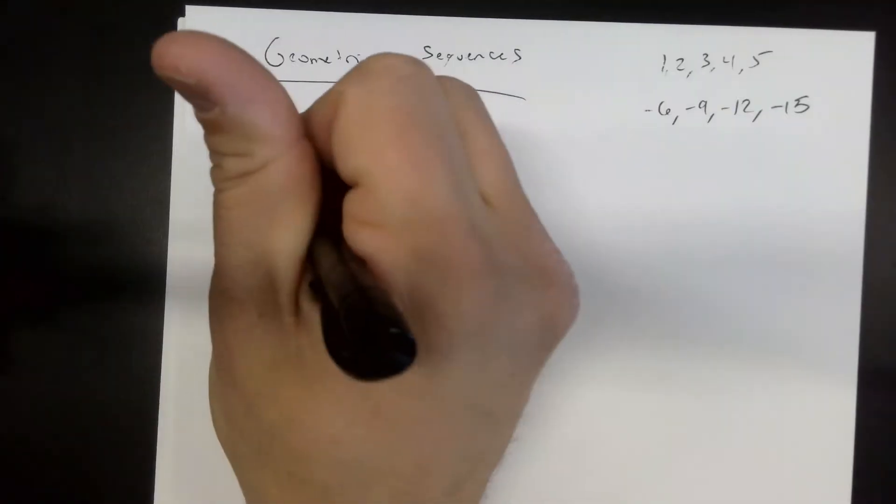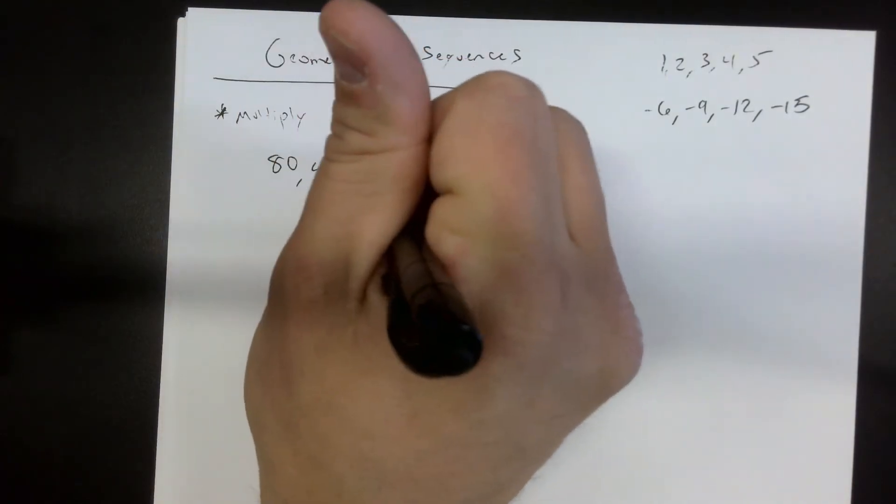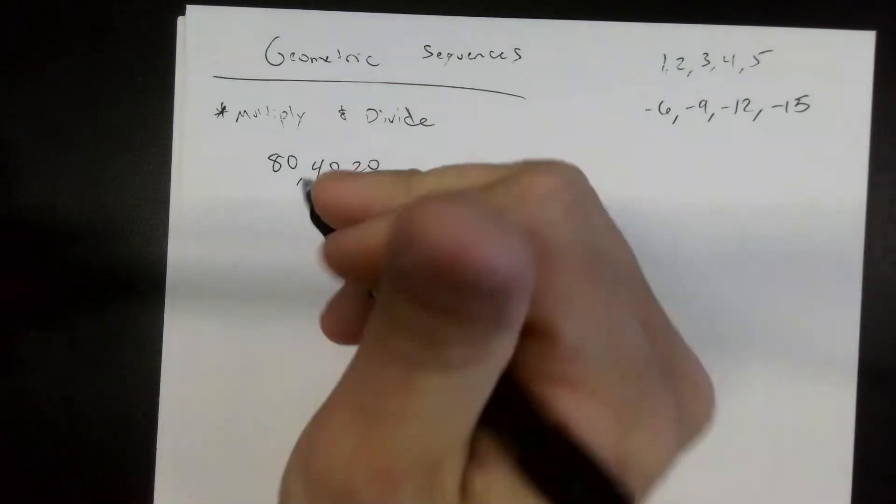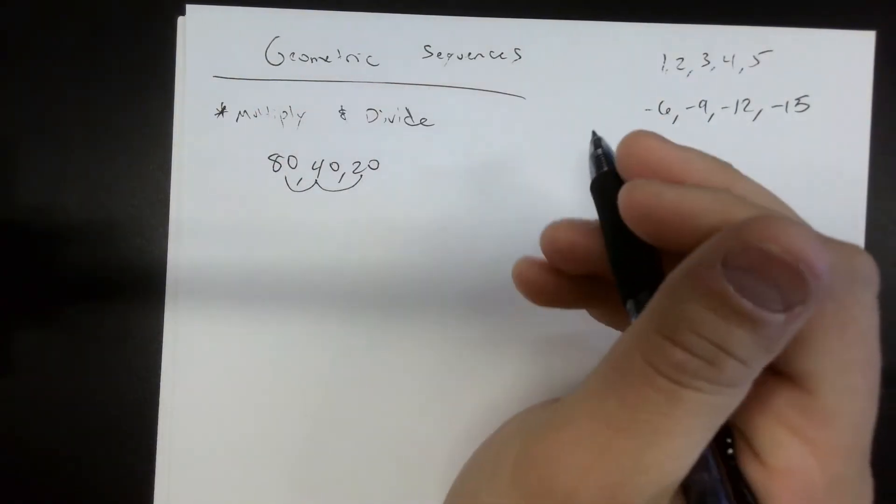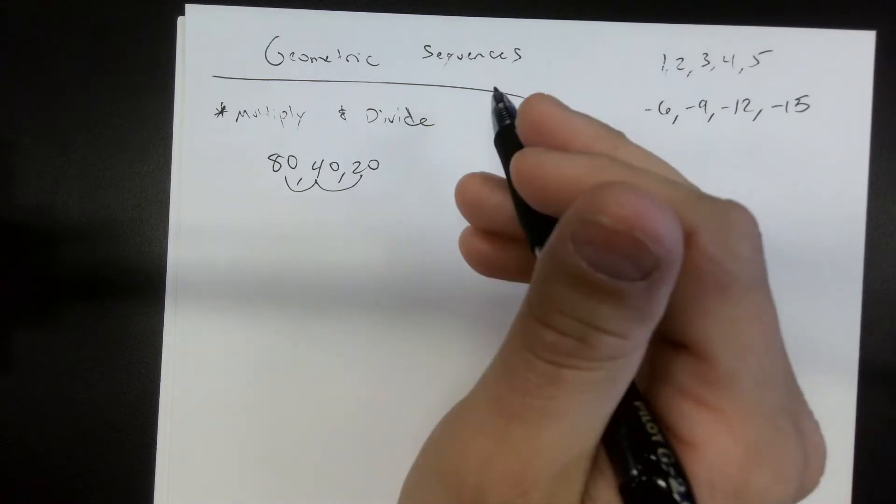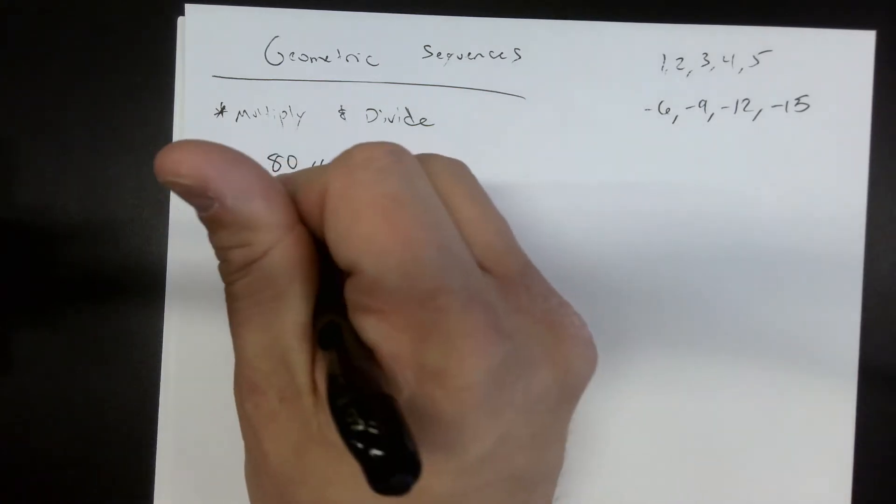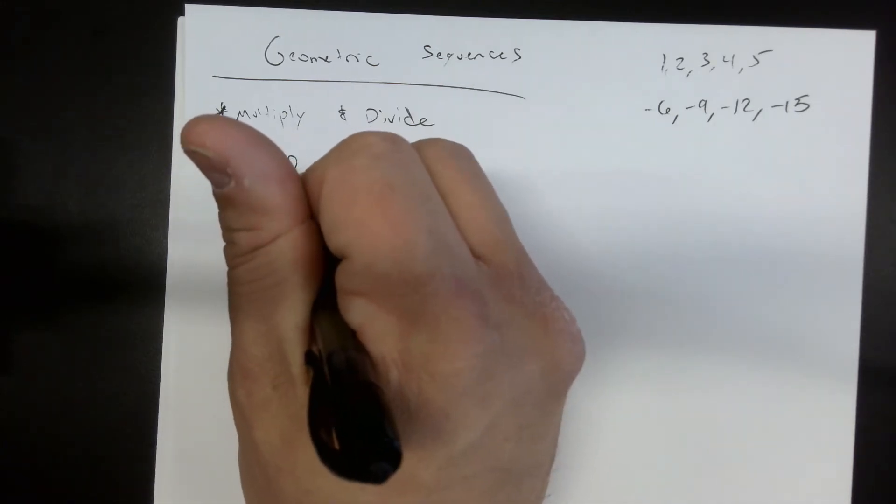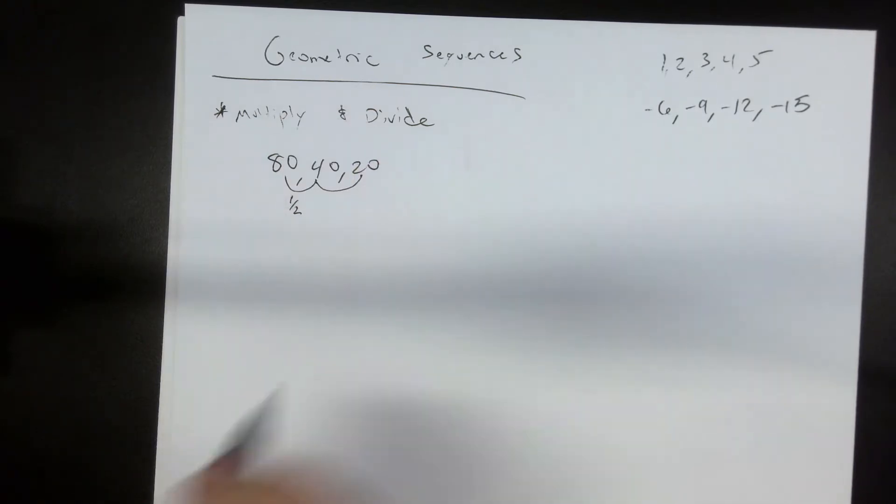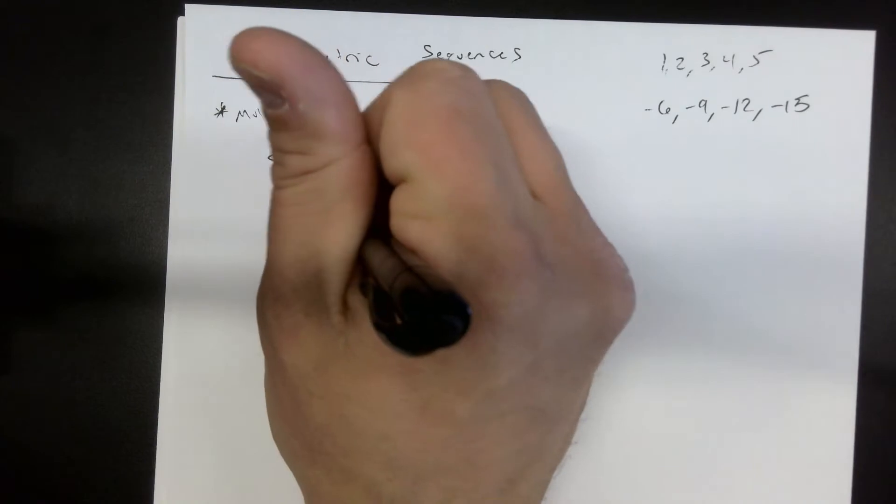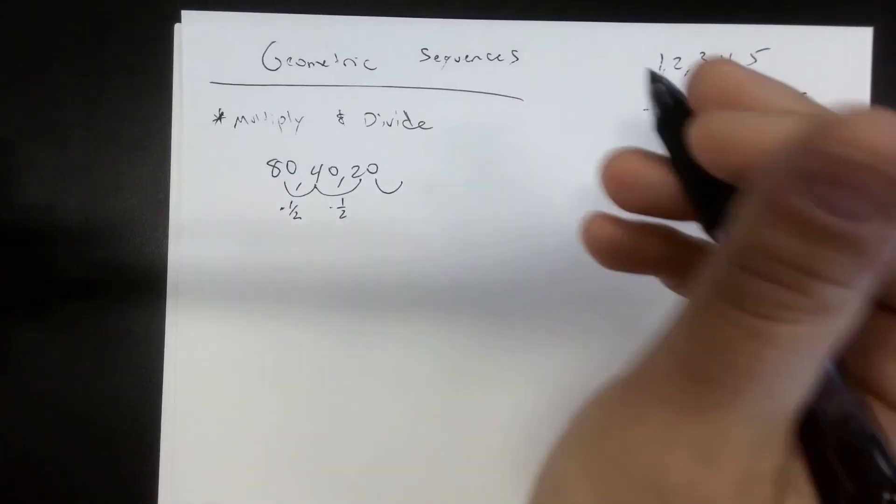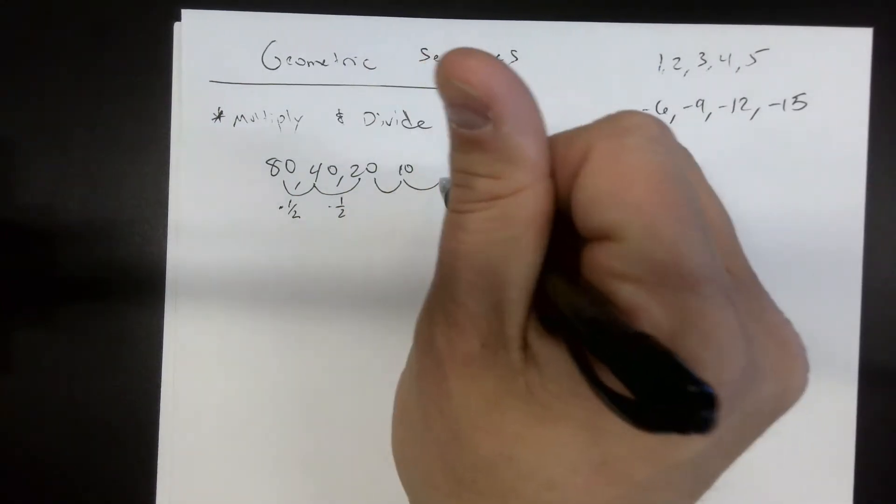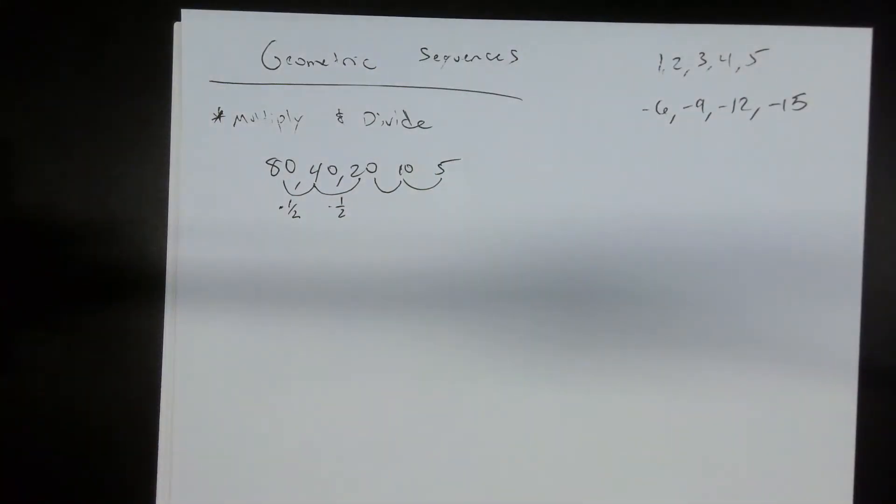So for example, if we have 80, 40, 20. Addison, what's happening between each one of these? They're multiplying by a fraction. So we're getting closer. Technically you're dividing by two, or you're multiplying by what? One half. So you're going to need to think about it in terms of fractions. So if you're dividing by two, technically you're multiplying by one half. So what would be the next term here? Ten. What would be the next term after that? Five. Five and so on and so forth. That would be an example of a geometric function.